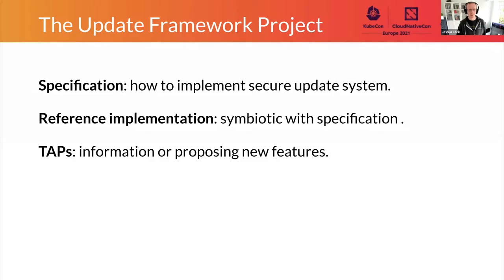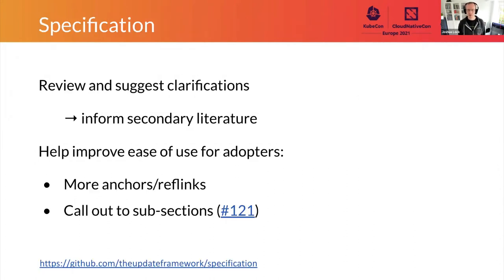TUF is effectively three main projects. The primary project is the specification — the framework in the Update Framework that describes how to implement a secure update system. Then we have a reference implementation, which is symbiotic with that specification, aims to always represent its state, and is where we proof-of-concept enhancements to the specification. And we have the TUF Augmentation Proposals or TAPs process, similar to Python Enhancement Proposals, for documenting information about the TUF system or proposing new features.